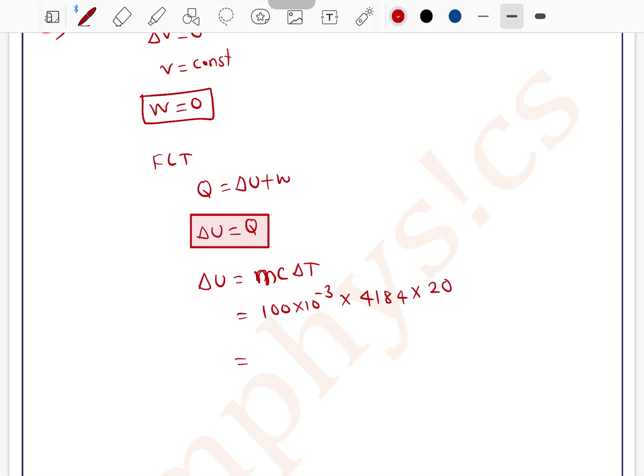This equals 2000 × 10^-3 × 2 × 4184, which equals 4184 × 2, which is 8368 joules.